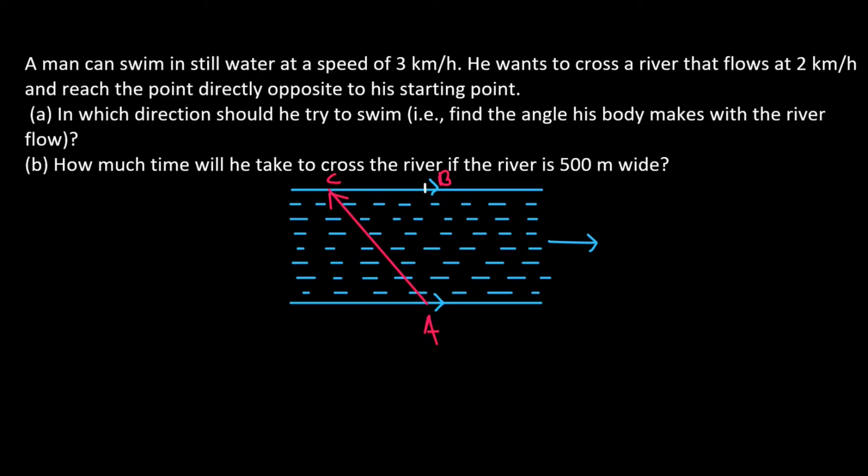What do we learn here? So, if we observe from the ground, then AB will be his velocity with respect to the ground.